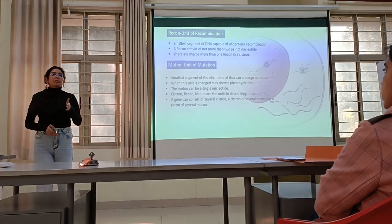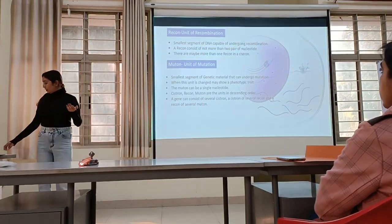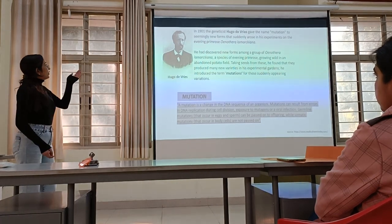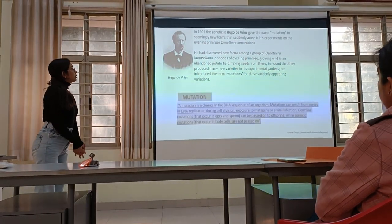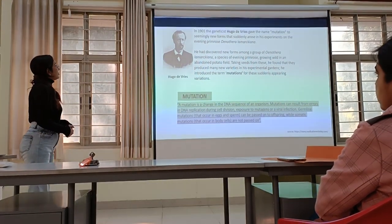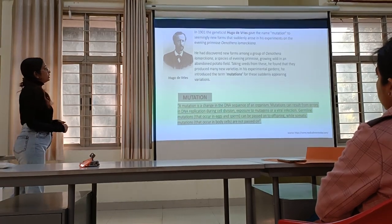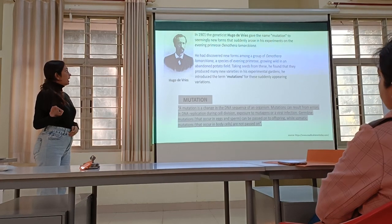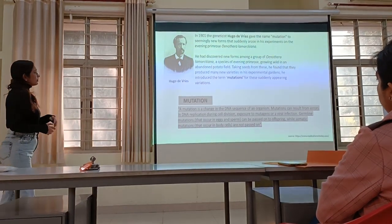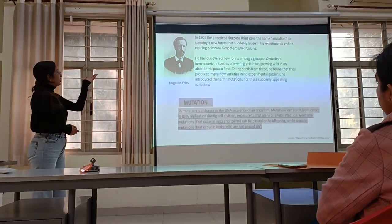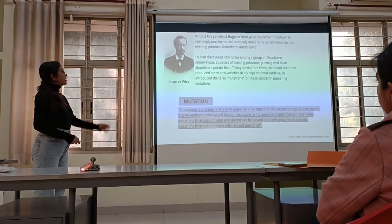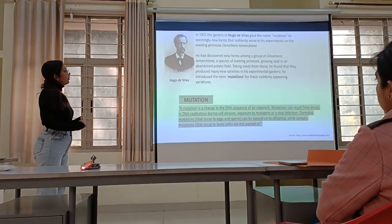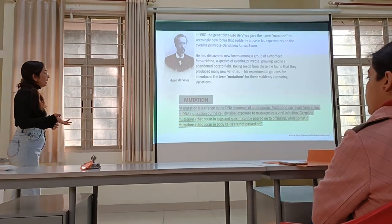Since we are talking about muton, we are going to see the history of mutation. Hugo de Vries was the first to coin the term mutation. He observed sudden formation of new variants in his experiment on Oenothera lamarckiana, the evening primrose. In his discovery, he clearly placed among the group of species of Oenothera lamarckiana, a species of evening primrose, growing in a garden.